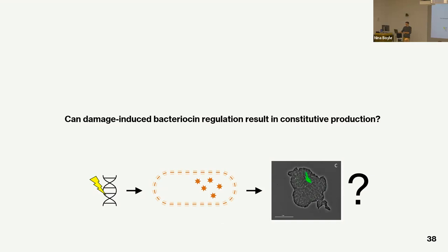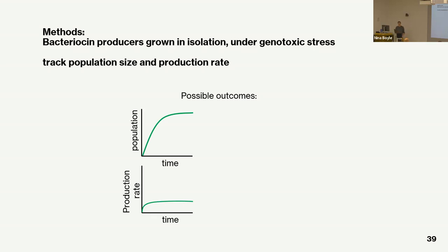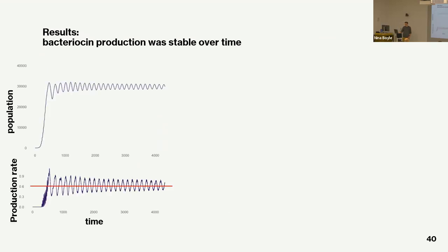To test whether damage-induced production can result in constitutive production, I first tried to recapitulate results from those two studies — growing bacteriocin producers by themselves in a healthy environment. There are two possible outcomes: if my hypothesis is correct, the population does well from the outside but has a low, steady production rate. Alternatively, if I'm wrong, the population crashes from DNA damage and production rate skyrockets as everything collapses.